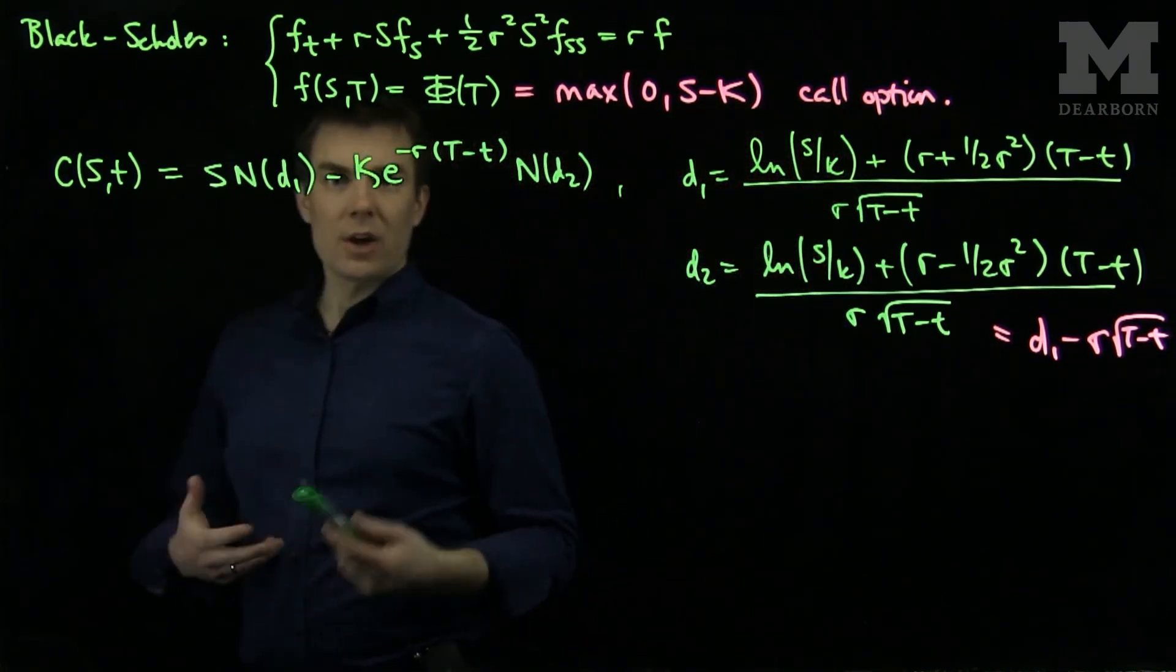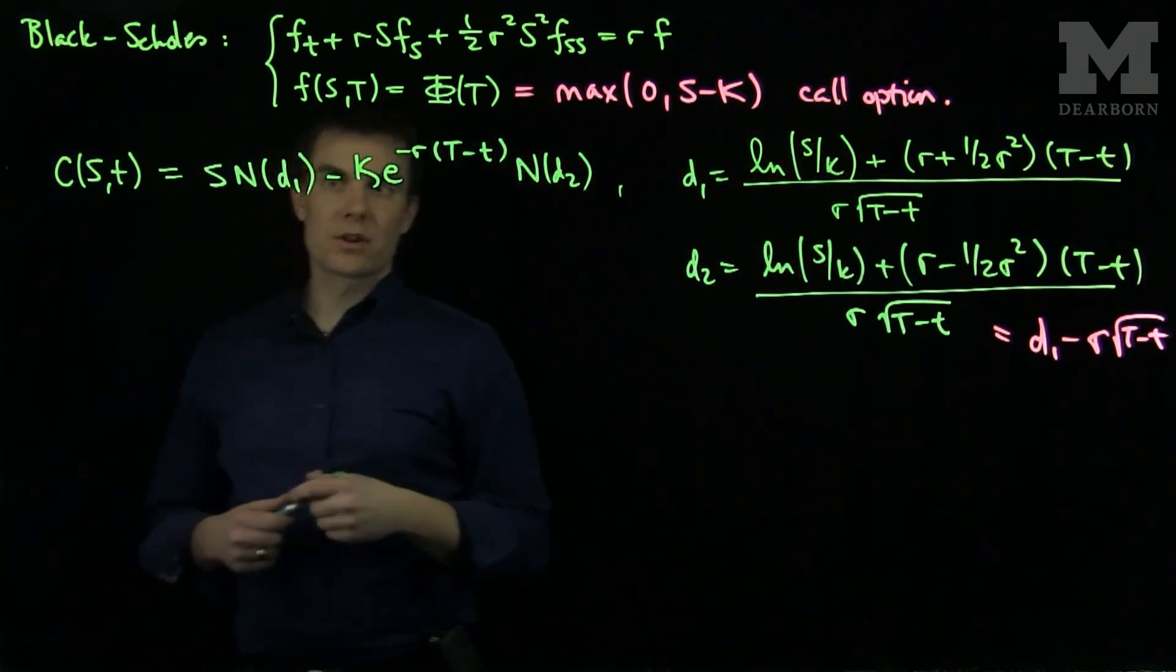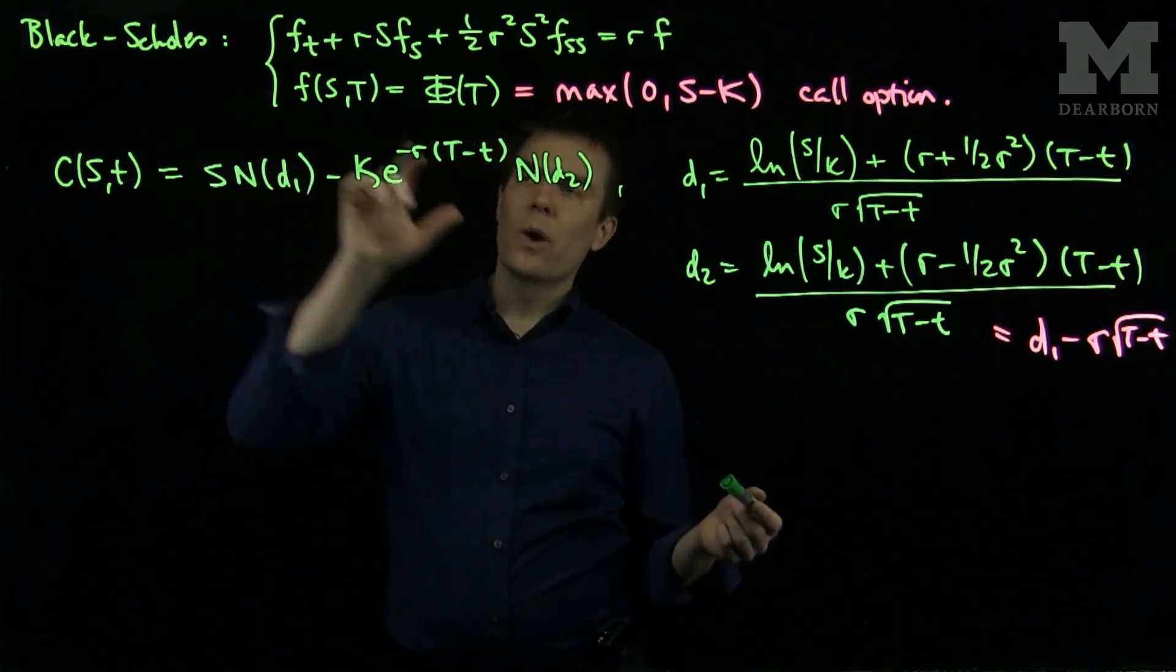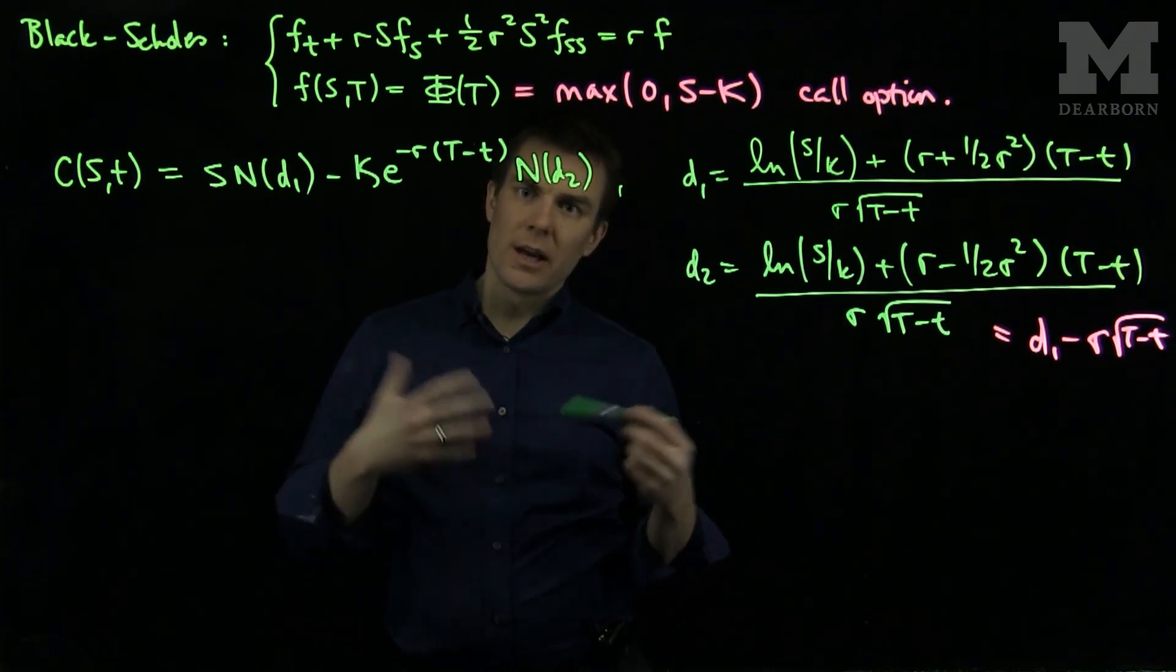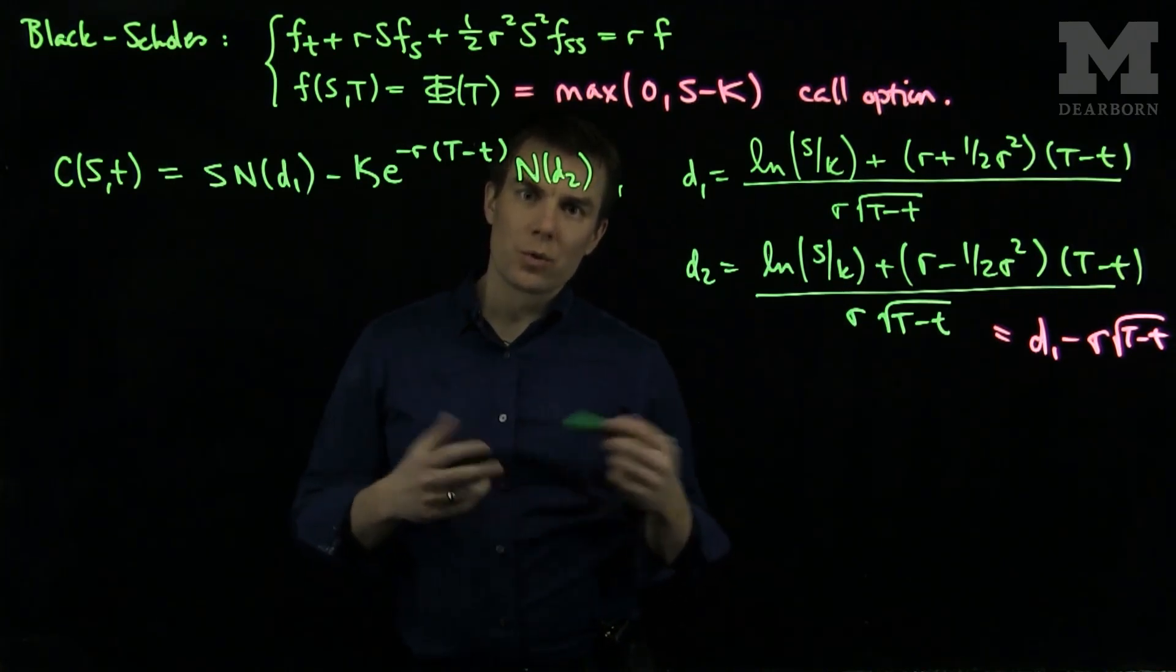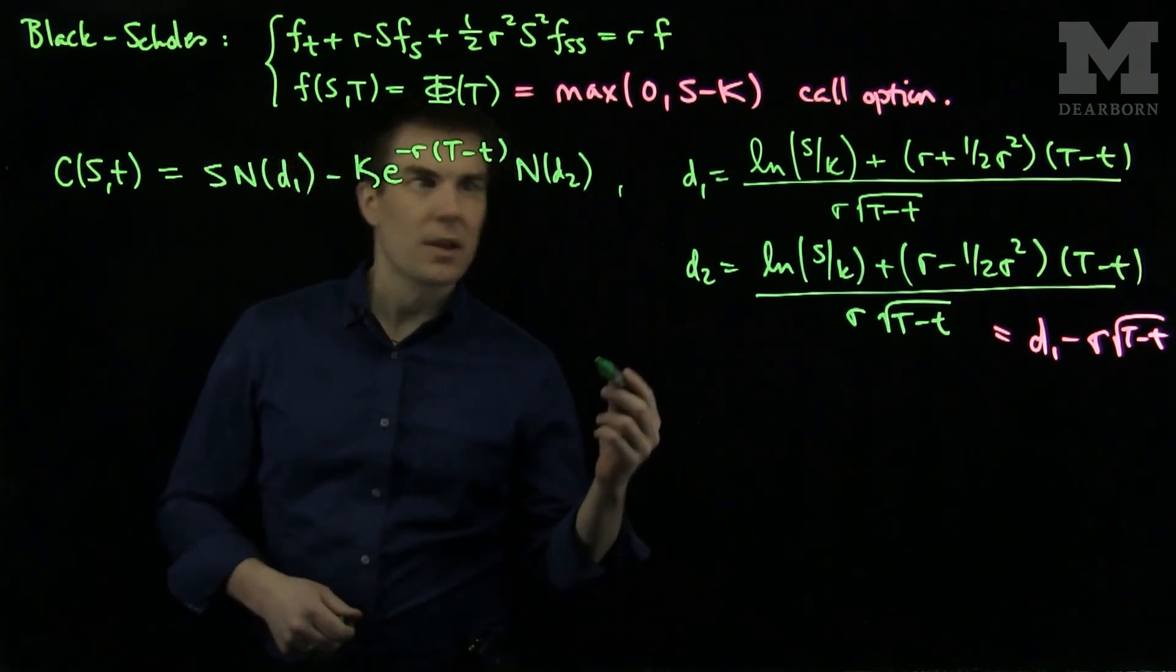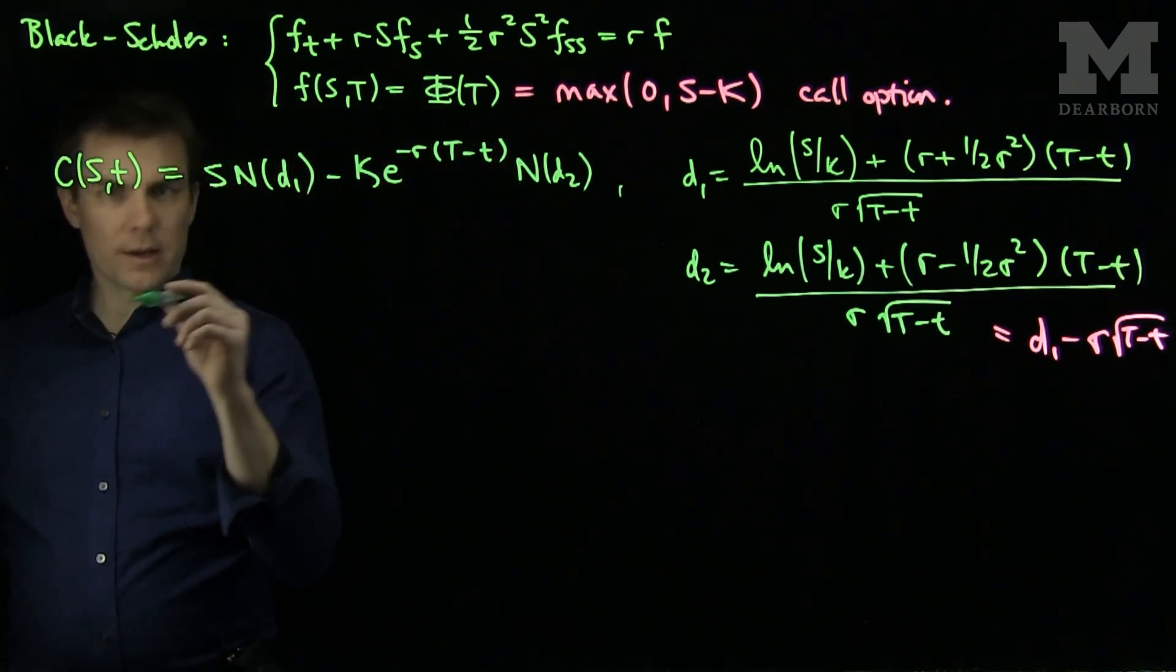Part of the verification that this is the solution involves plugging this back in and checking. However, there's a way to transform the Black-Scholes PDE into an analog of the heat equation, which we'll see in further videos, and that's the realistic way of deriving this. Now, what we should observe is the following.